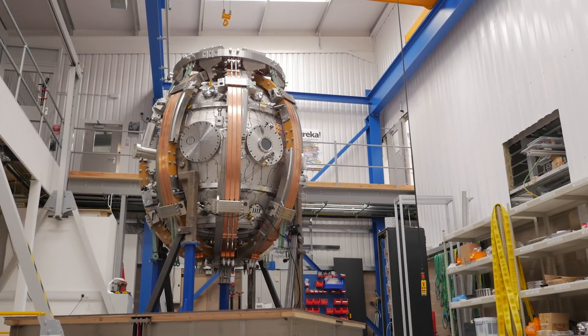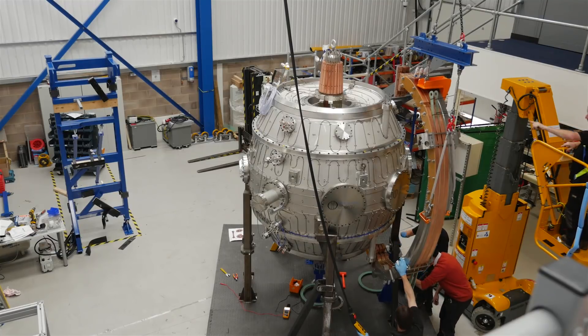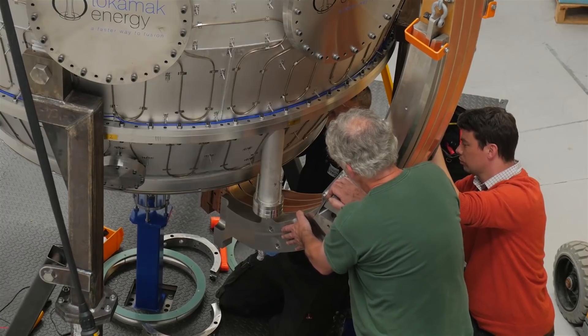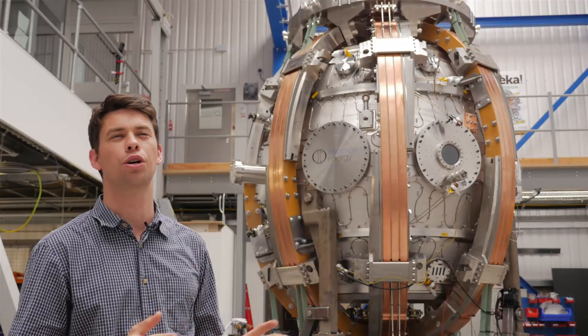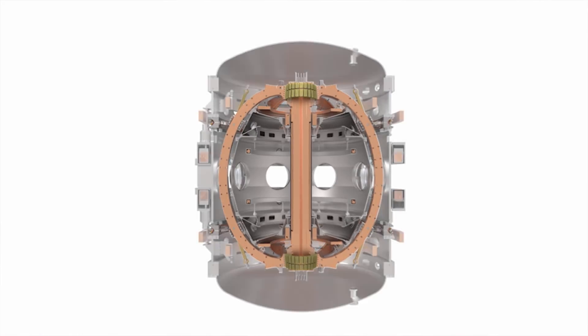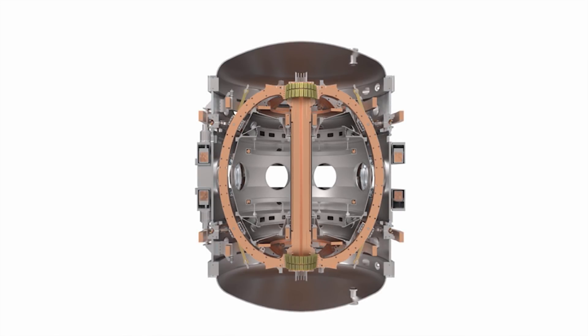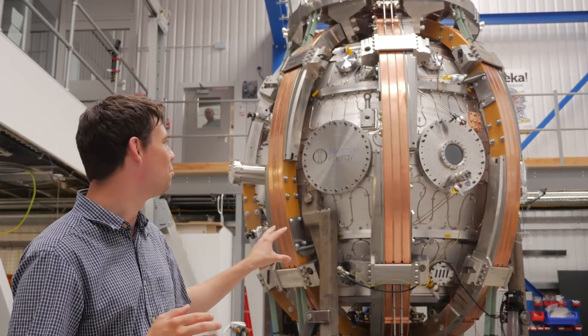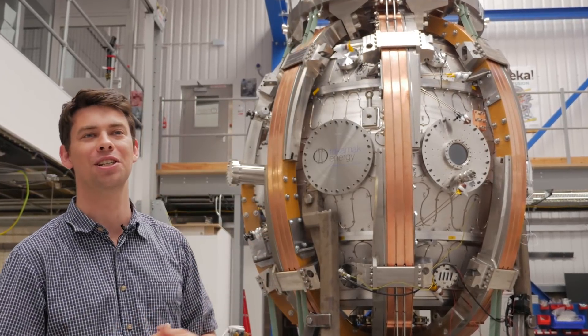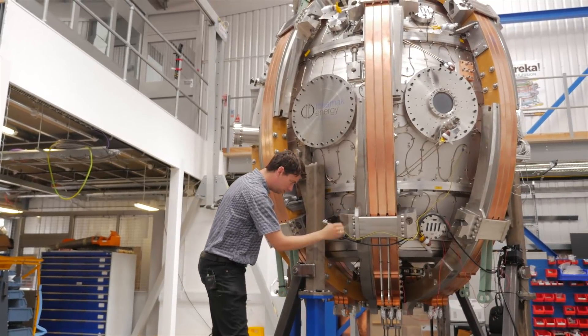Each limb is about a ton in total and at the moment we've probably got about 10 to 12 tons on there, but later the full assembly will be more like 40 to 50 tons. So as you can imagine there's going to be a lot more going on here than you can see at the moment.